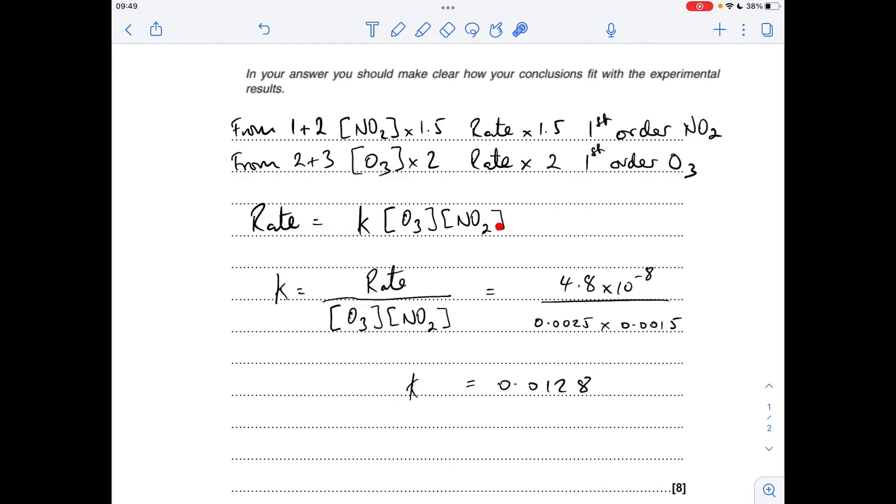So the rate equation is going to look like that, and we're rearranging for K, so it becomes rate over the concentrations. Using experiment 1, I always use the first row unless told otherwise, so we'll put the numbers in. So we're getting a numerical value for K at 0.0128.